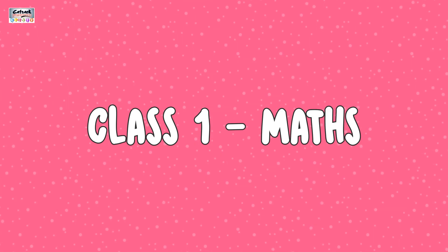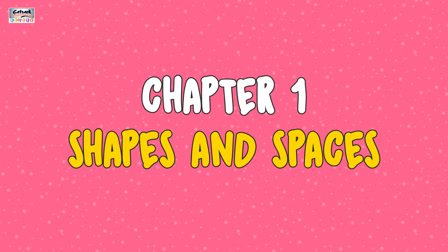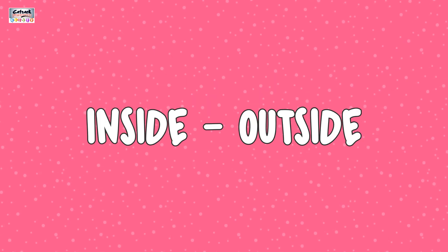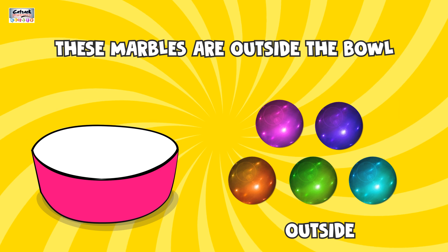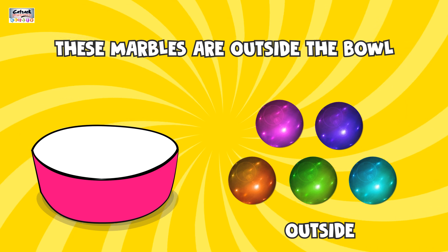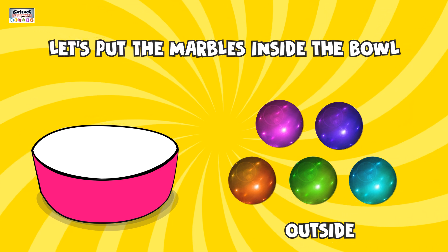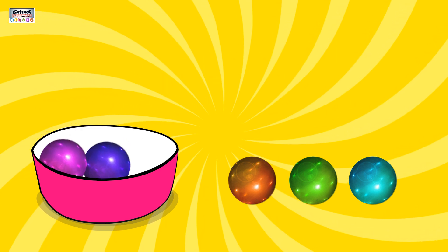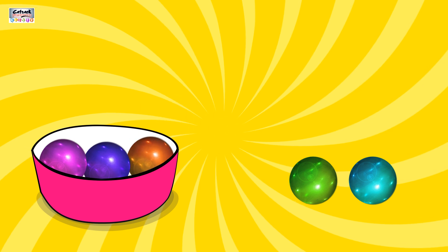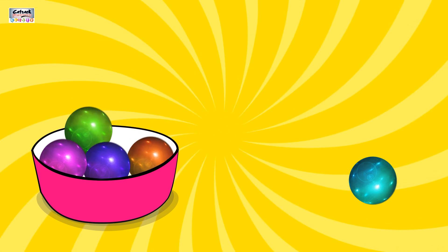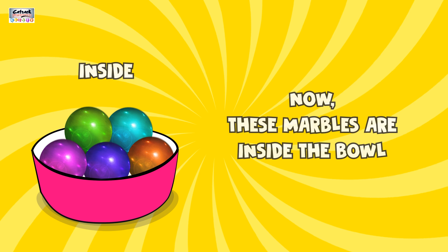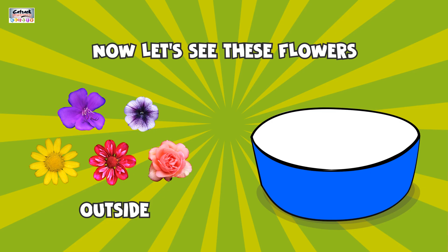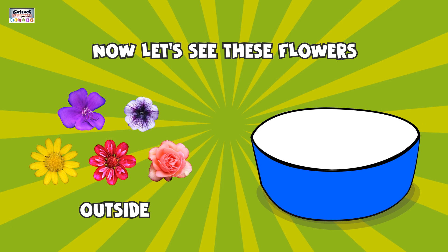Class 1 Maths, Chapter 1: Shapes and Spaces. Inside and outside. These marbles are outside the bowl. Let's put the marbles inside the bowl. 1, 2, 3, 4, 5. Now these marbles are inside the bowl. Now let's see these flowers.